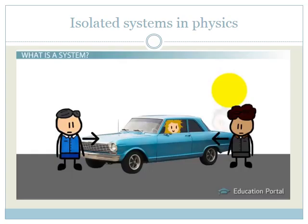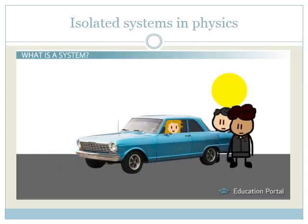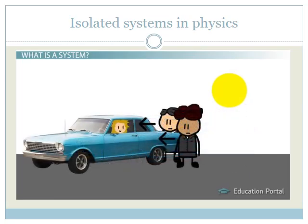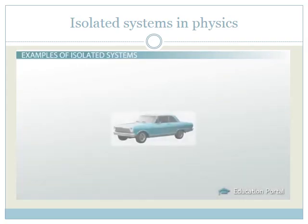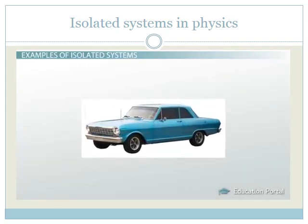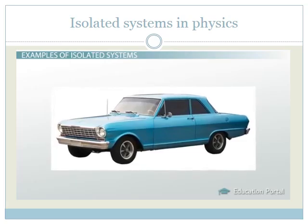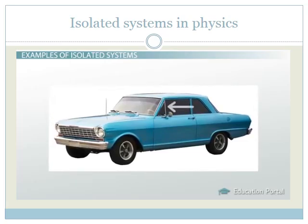It would be much wiser to have your friend help you push from the same end so that the force is unbalanced, taking you out of the isolated system with the car. The car is a pretty straightforward example of an isolated system because it's easy to see how you wouldn't move it by pushing from the inside or by pushing from opposite sides. But objects in an isolated system aren't always clearly contained like this.